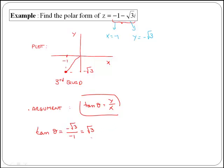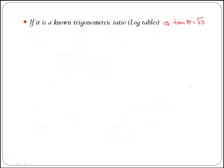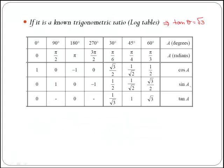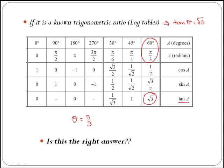Now because the trigonometric ratio is a known ratio, you can either go to your log tables or use your calculator. If we use the log tables, then we'll do the same as before: which angle has tan equal to the square root of 3? And the answer is 60 degrees, or pi over 3, which means that you could be saying theta is equal to pi over 3, but is this the right answer in this case?